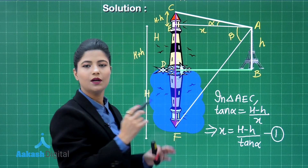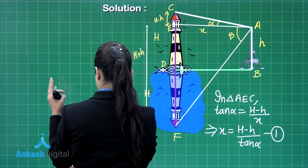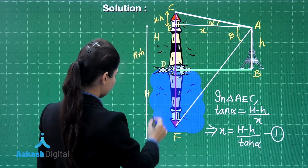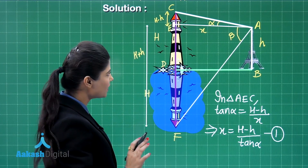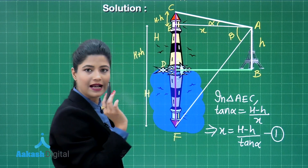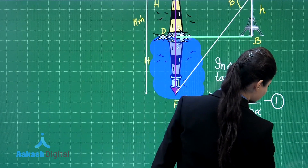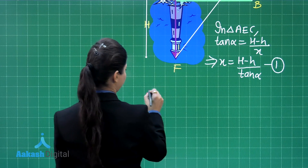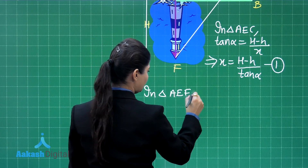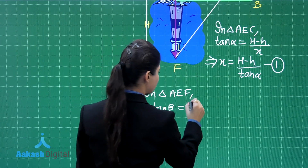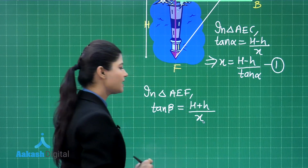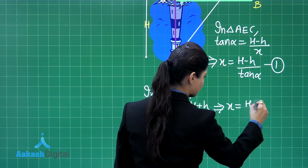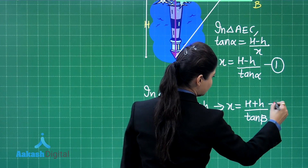Similarly, in triangle AEF for angle beta, the perpendicular EF equals capital H plus small h and the base AE is x. Applying tan beta: tan β equals (H plus h) upon x, giving x equal to (capital H plus small h) upon tan beta. Let this be equation number 2.